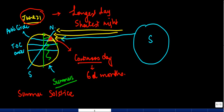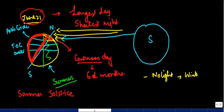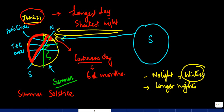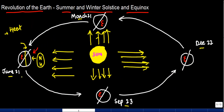Now, what will happen in the southern hemisphere? The conditions are obviously going to be opposite. That portion will not be receiving any light from the sun rays, so it will be winters in those places, and the nights are going to be longer.